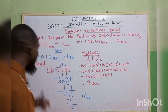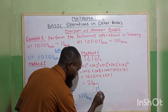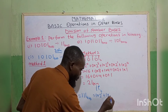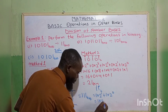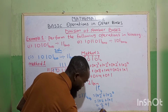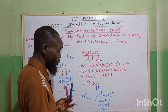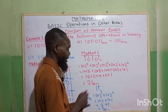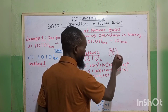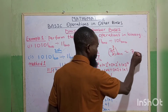Now we change 11 base 2 to base 10 as well. We label positions 0 and 1. So we have 1 times 2 to the power 1, plus 1 times 2 to the power 0. That gives 1 times 2, plus 1 times 1 — so 2 plus 1, which gives us 3 base 10. Since we converted both to base 10, we divide them together: 21 base 10 over 3 base 10. 3 goes into 21, giving us 7 base 10.